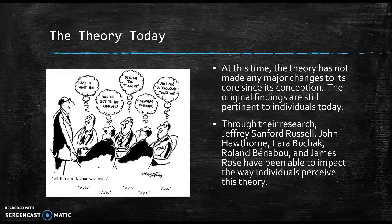At this time, the theory has not made any major changes to its core since its conception. The original findings are still pertinent to individuals today. Notwithstanding, there have been a large amount of studies done that have reinforced the theory in different ways. A journal titled Groupthink developed a mathematical equation to determine the chances that groupthink would occur. The paper took into account the likelihood of a large group agreeing on one idea, as well as those who would be an outlier and not given to groupthink no matter the consequences. This journal added to the validity of the theory, and each of the studies and papers have added to the utility of the theory as well. Researchers have been able to broaden their understanding and influence how the communication field views groupthink.